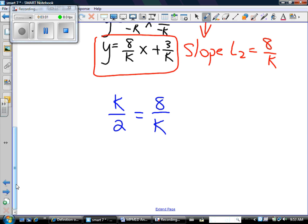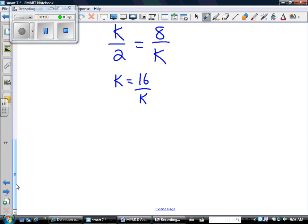Let's multiply everything by 2 to get rid of the 2, so I'll have k equals 16 over k. And then I'll multiply everything by k to get rid of divide by k. So k squared equals 16. If k squared equals 16, then k equals the square root of 16. So k equals 4.